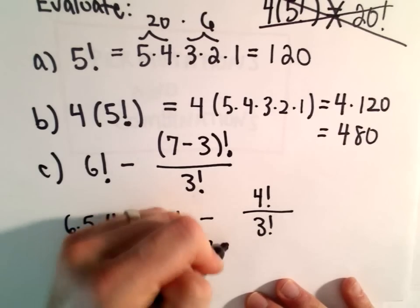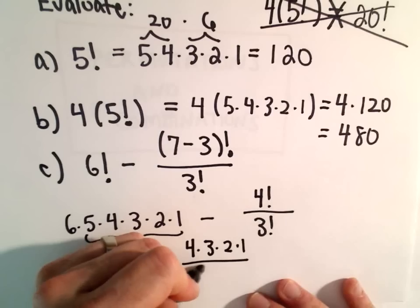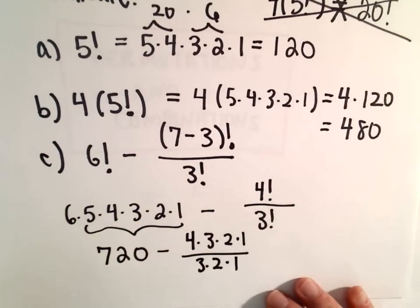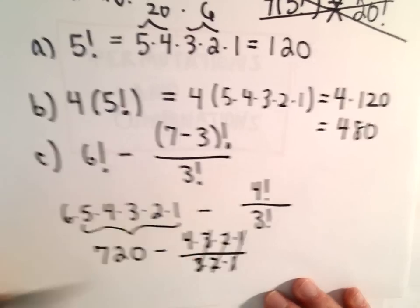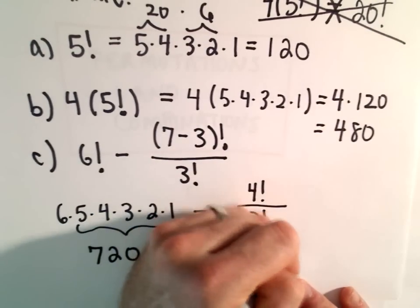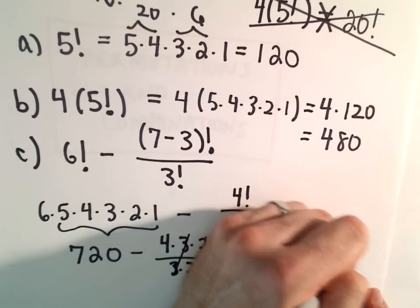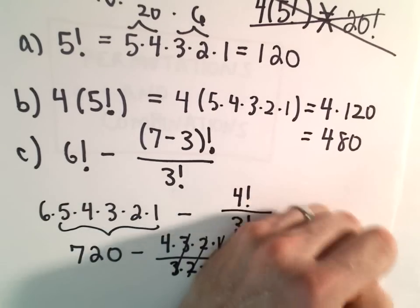Notice, though, 4 factorial is 4 times 3 times 2 times 1. 3 factorial is just 3 times 2 times 1. So, if we cancel out those common factors, really we're just going to be left with a 4 in the numerator. So, we have 720 minus 4. If we simplify that, we get 716.